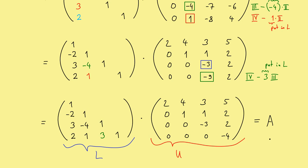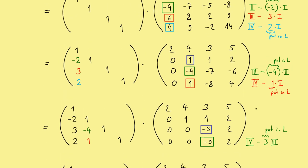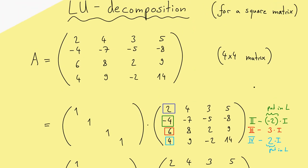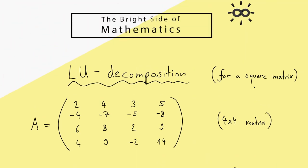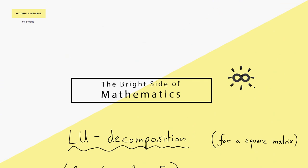However just in the case that we don't need to use row exchanges in the Gaussian elimination. How to deal with this and how to generalize the whole concept here I can show you in another video. For now I hope this example really helped you such that you now can calculate an LU decomposition of a matrix. And then see you next time. Bye.